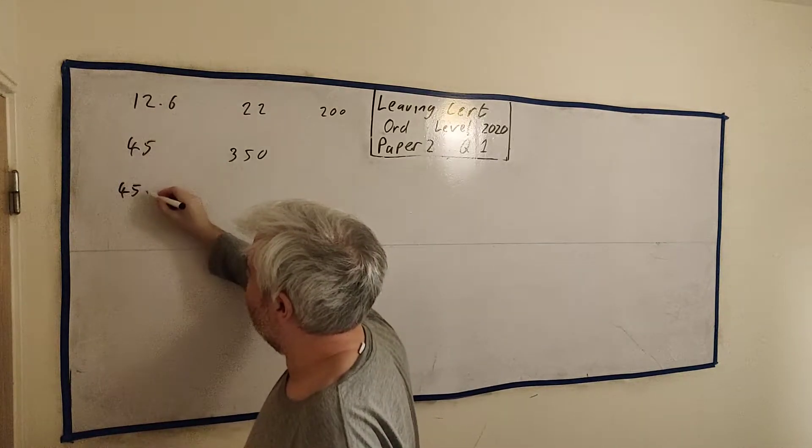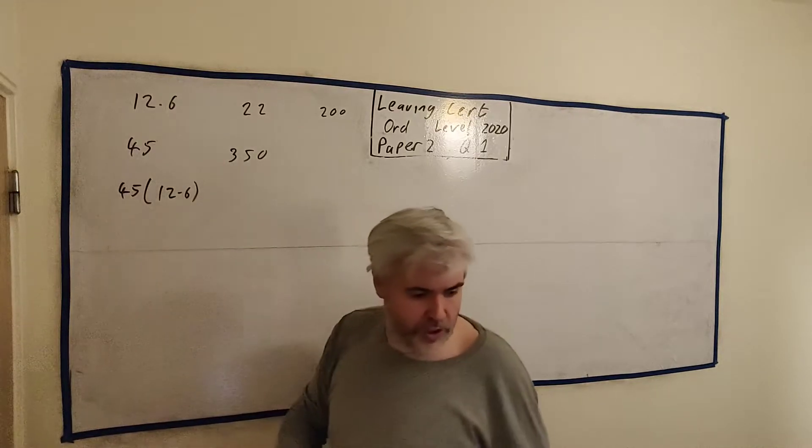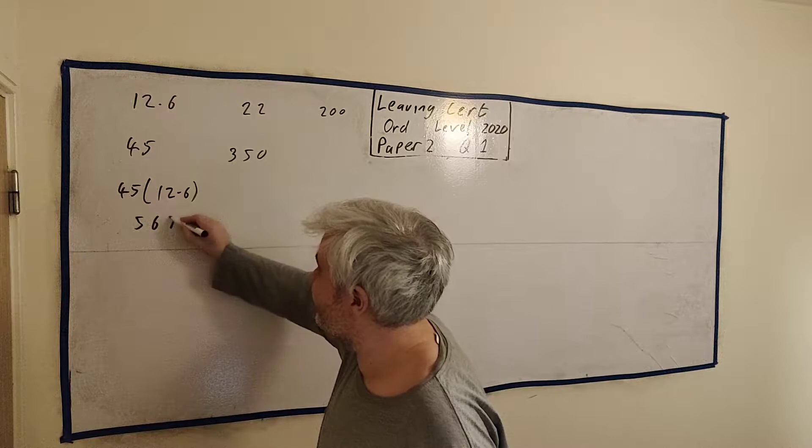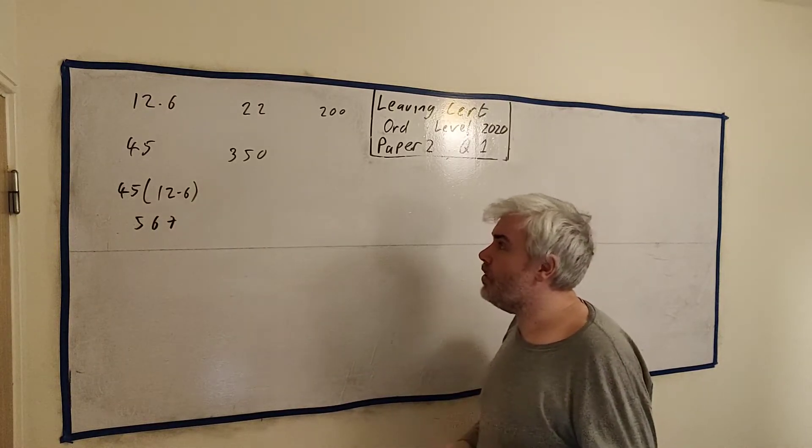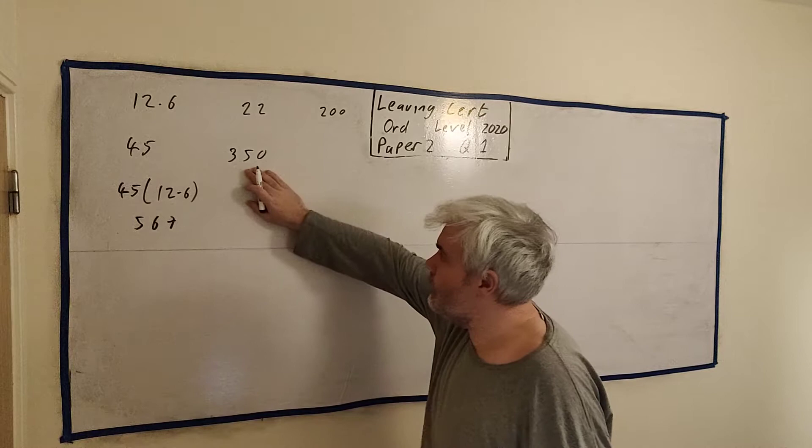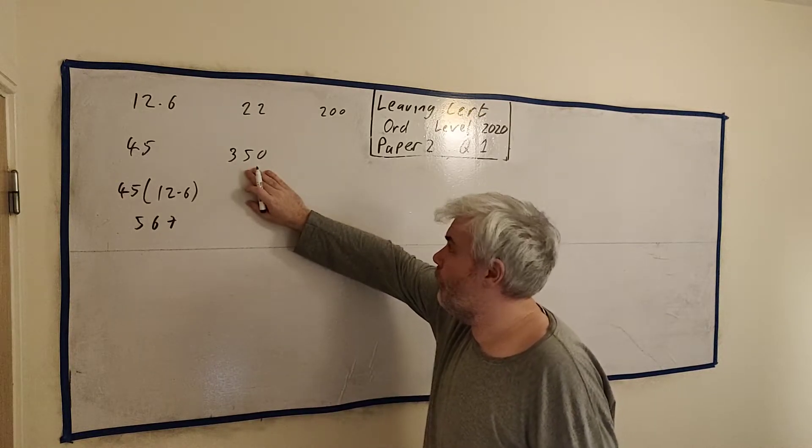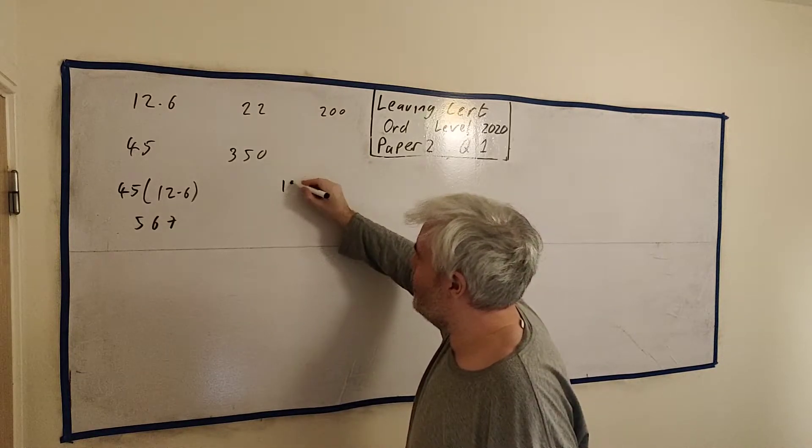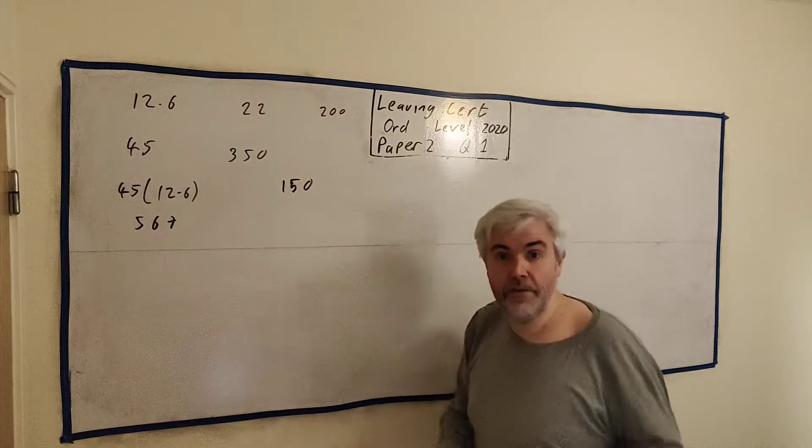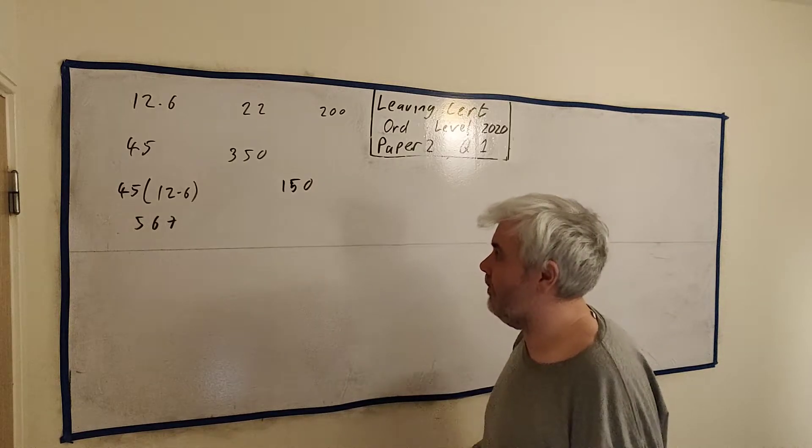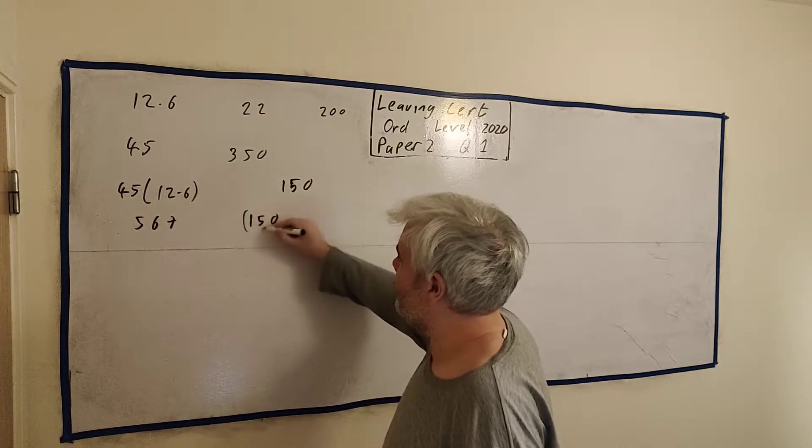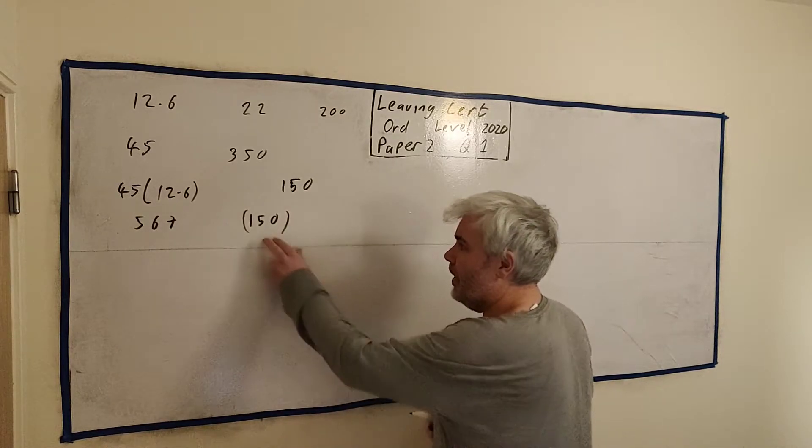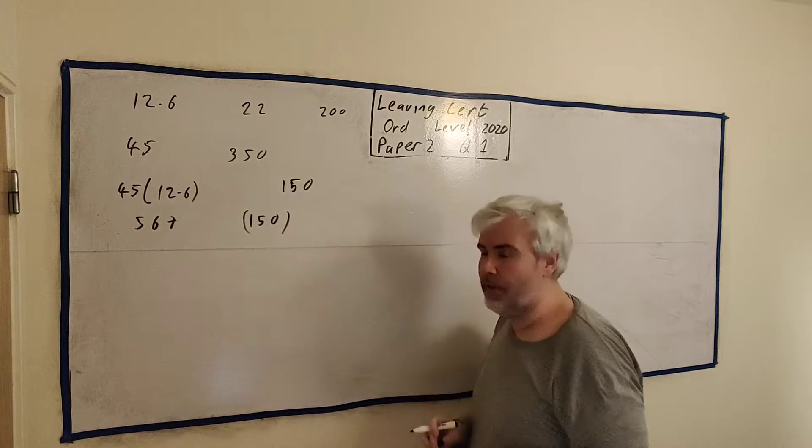We just multiply them together. We'll get 12.6 times 45, which is €567. He then also makes money on his sales. He sold €350 worth of stuff. He only makes money after the first €200 though. So let's find out how much he makes money from: €150 of sales he's going to make commission on. So he's going to make 22% commission.